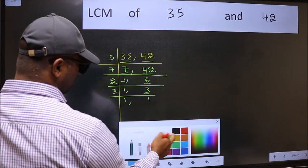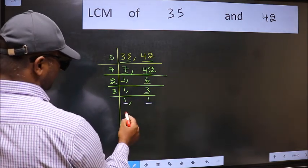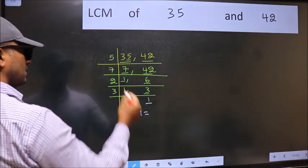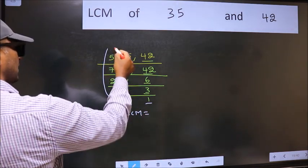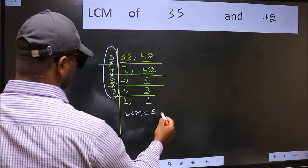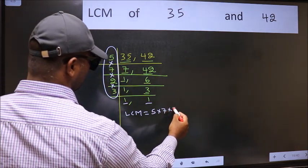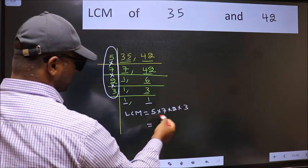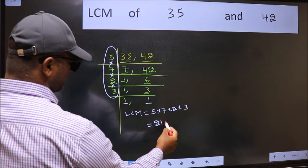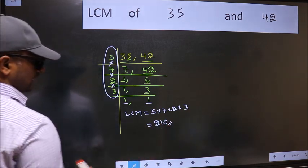So we got 1 in both the places. So our LCM is, LCM is the product of these numbers. That is 5 into 7 into 2 into 3. When we multiply these numbers, we get 210 is our LCM.